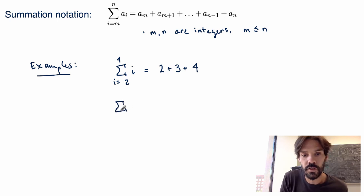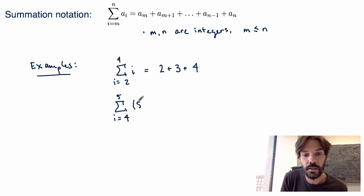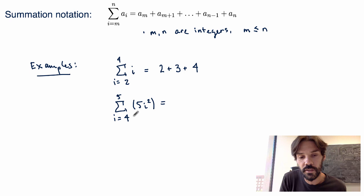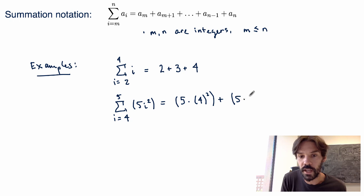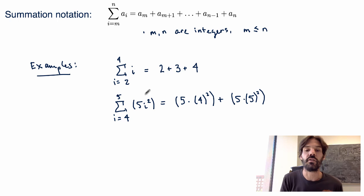Now a slightly more complicated example: suppose I have the sum from i equals 4 to 5 of 5i squared. I want to evaluate these coefficients from i equals 4 to 5, so I get two terms. The first will be 5 times 4 squared, plus the same thing evaluated at i equals 5, so 5 times 5 squared. This is what this expression means.